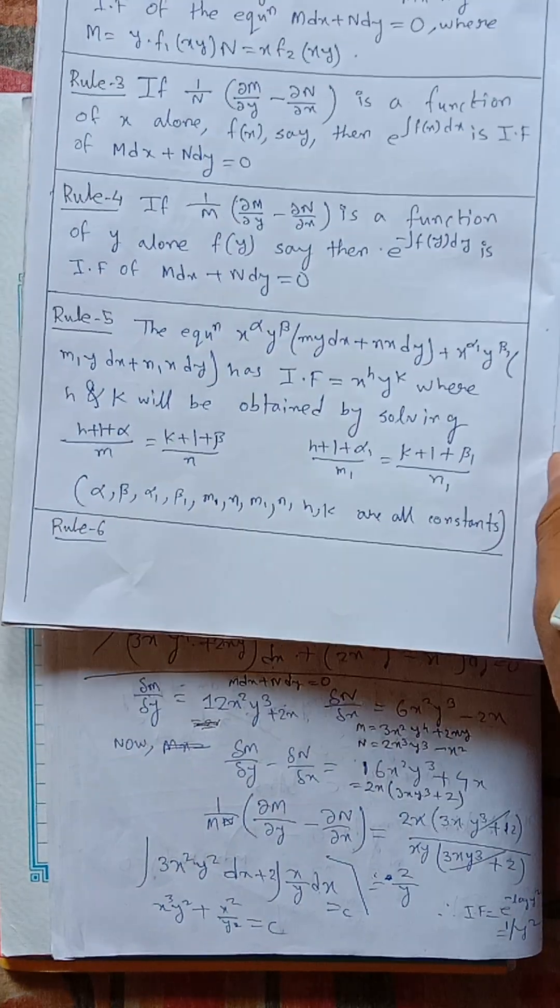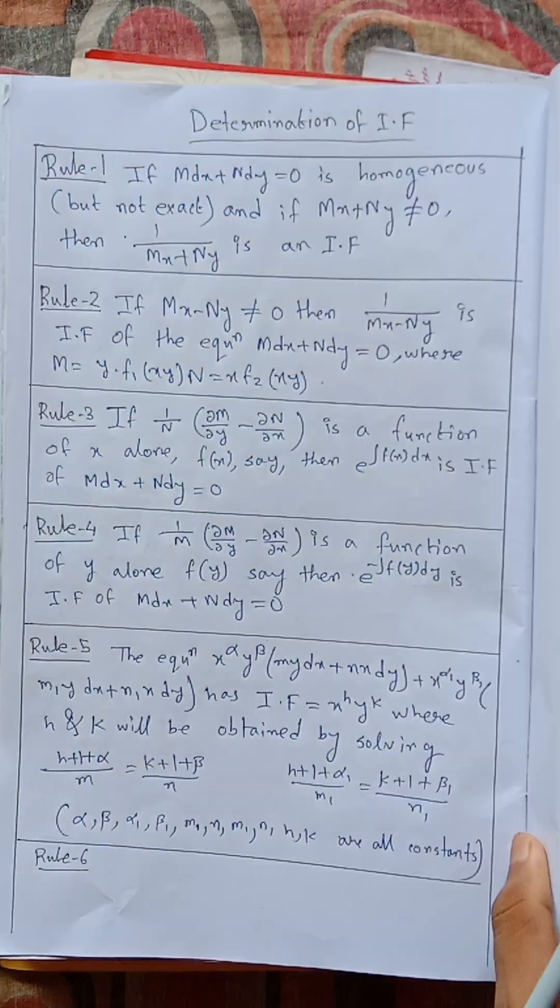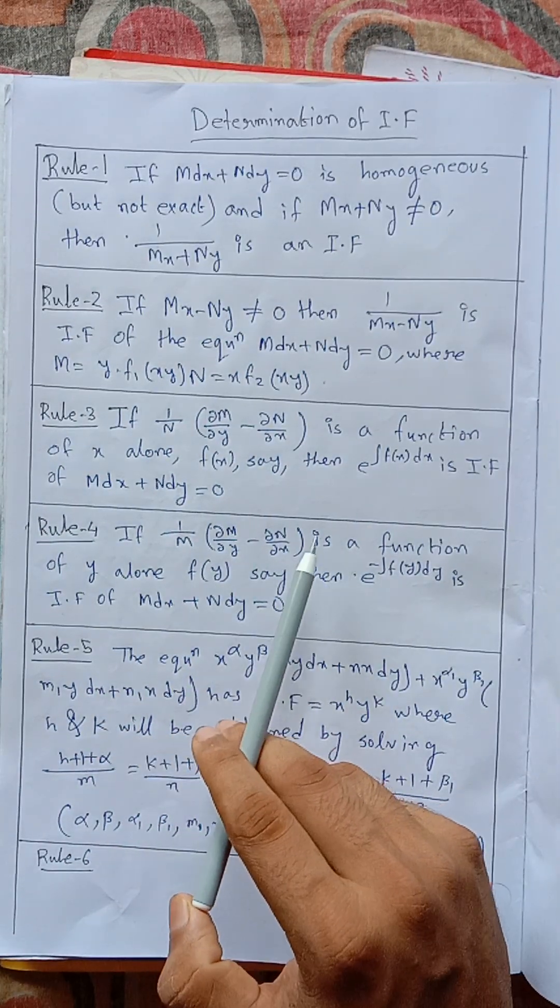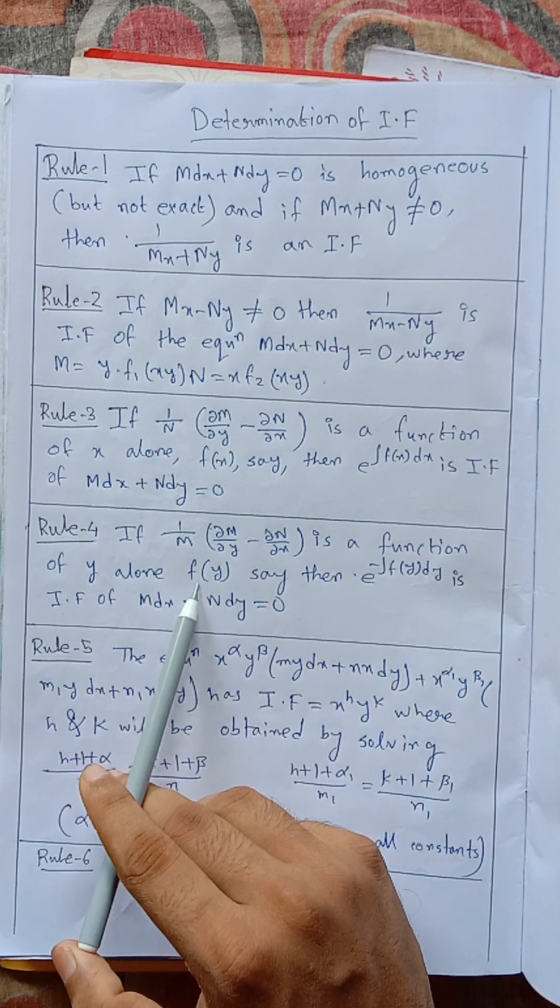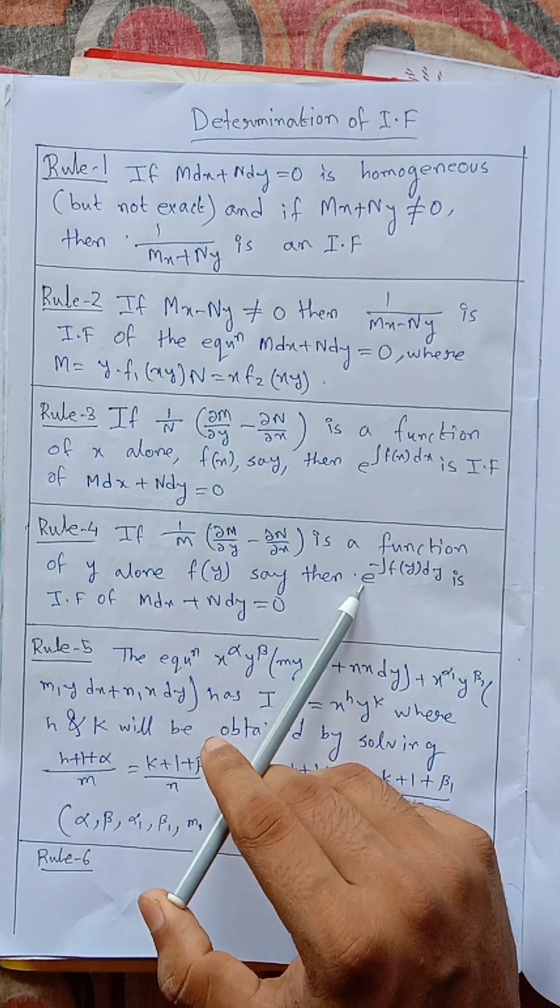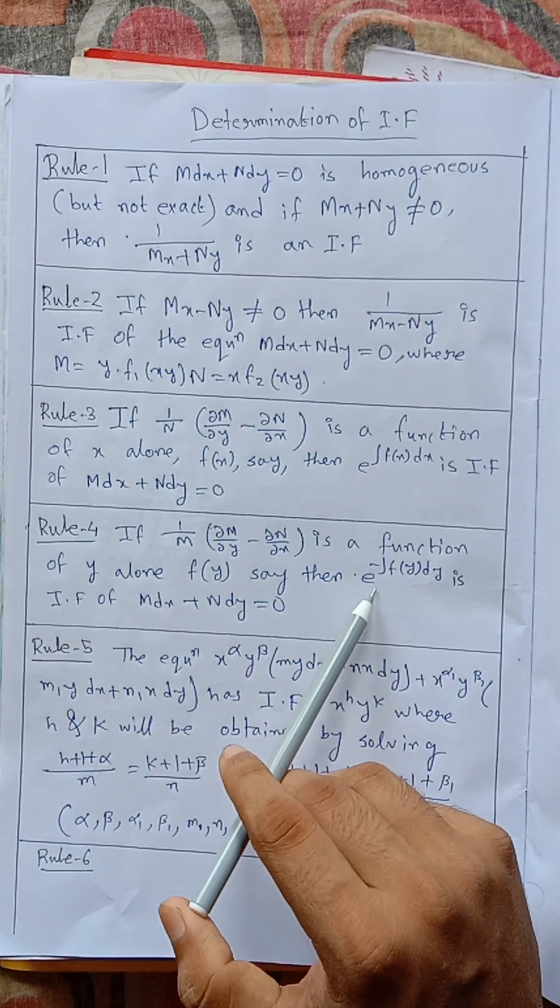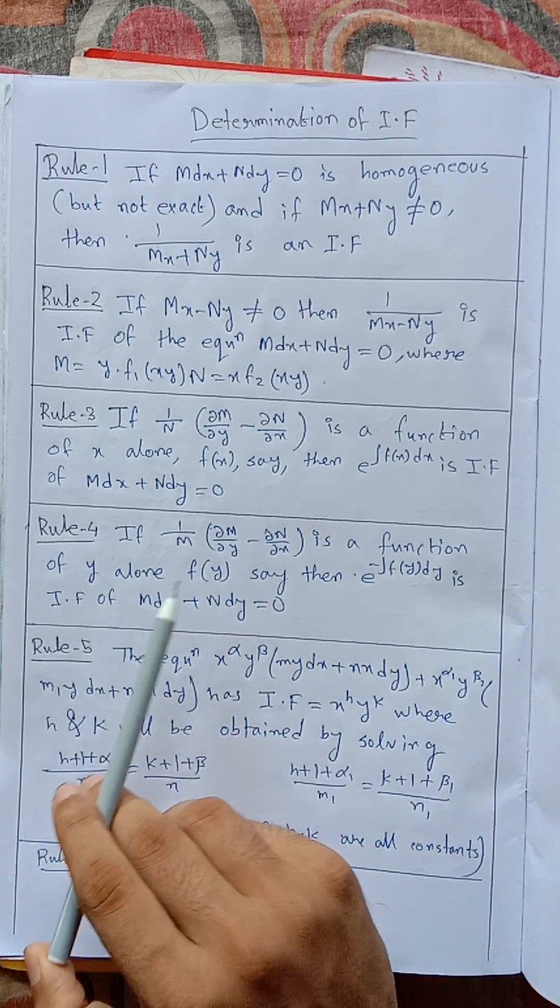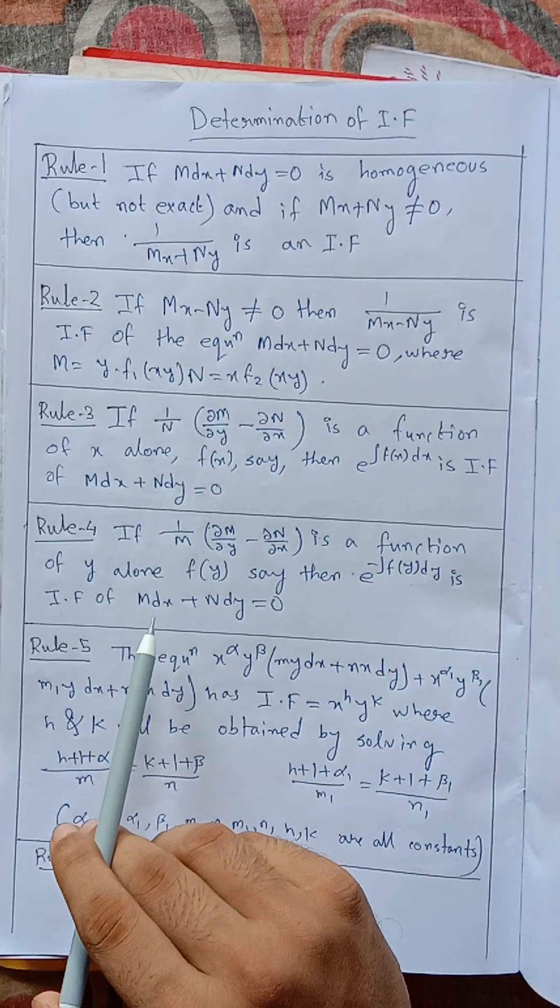We know the rule that if we divide it with m, if there is a function of y alone f(y), then the integrating factor is e to the power minus integration f(y) dy, which is the integrating factor of mdx plus ndy.